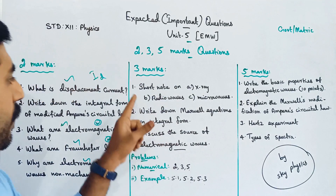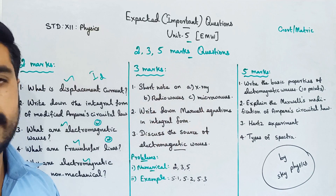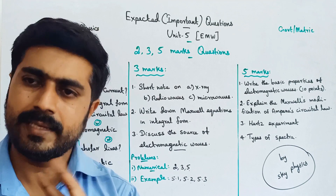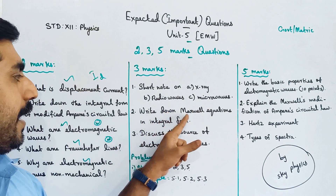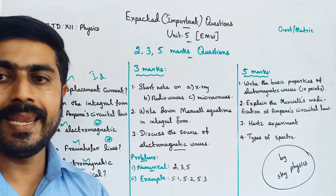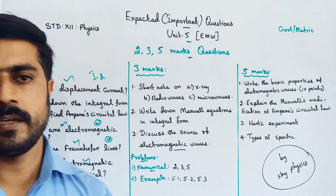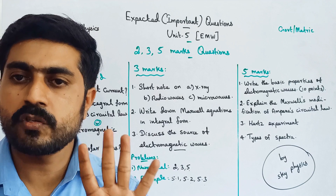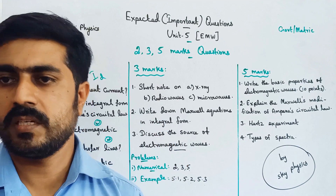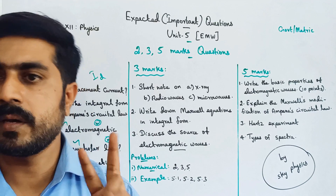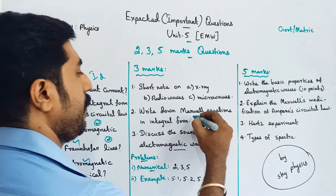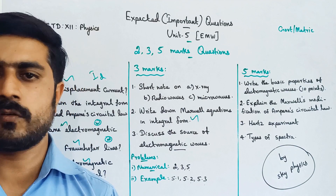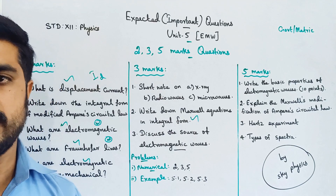For 3 marks: first, short note on X-ray, radio waves, and microwaves — at least one of these two. Second, write down Maxwell's Equations in integral form — think of 3 marks, four equations, at least one concept. Third, discuss the source of electromagnetic waves — where electromagnetic waves are produced and obtained.